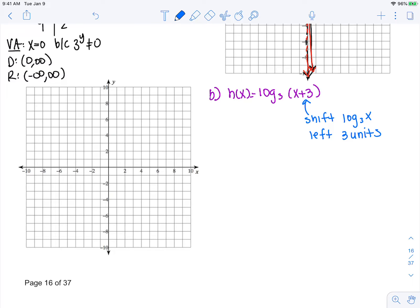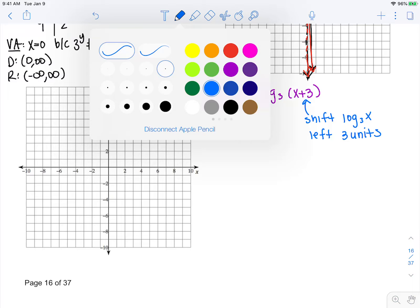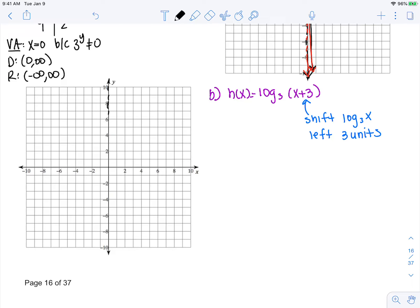We have our table from above. It has this vertical asymptote here, and we know f(x) goes through the points (9, 2), (3, 1), (1, 0), and (1/3, -1). These last two points show that we're getting close to the vertical asymptote. This is f(x).